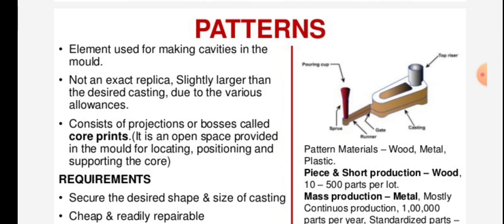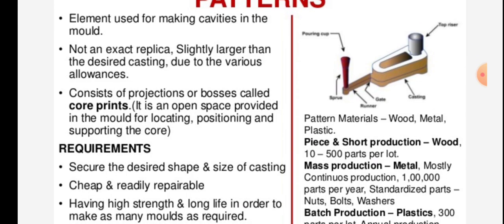The element used for making cavities in the mold is called a pattern. It is not an exact replica — it is slightly larger than the desired casting due to various allowances. It consists of projections and/or bosses called core prints, which are open spaces provided in the mold for locating, positioning, and supporting the core.